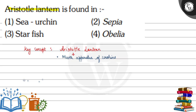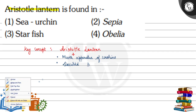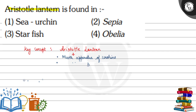Why do we call this Aristotle's lantern? It was described by Aristotle in his book — that is why it was given this name. Aristotle is the father of biology. And why do we call it a lantern? Because its shape resembles a lantern used in the old days. So the name comes from Aristotle's description and the lantern-like shape.